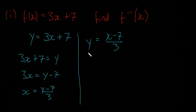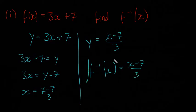So instead of x is equal to y, y is equal to x now. And then you just say f^(-1)(x) is equal to (x minus 7) over 3. And that's your answer.